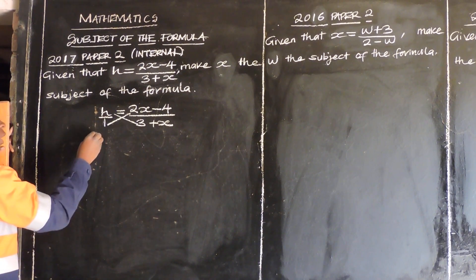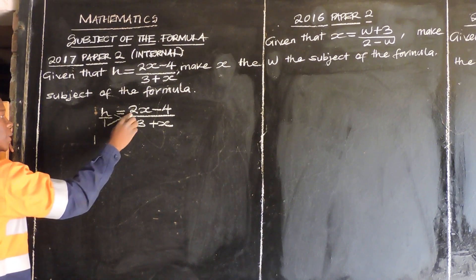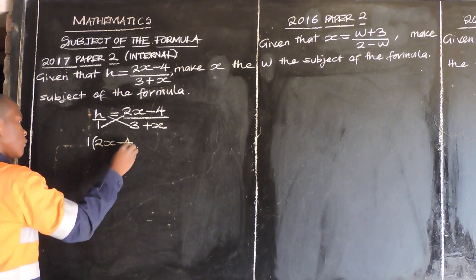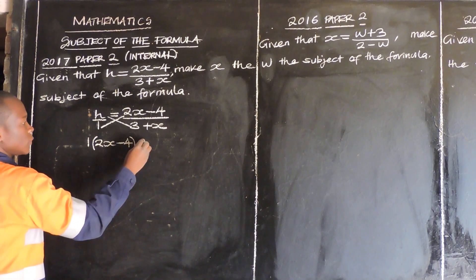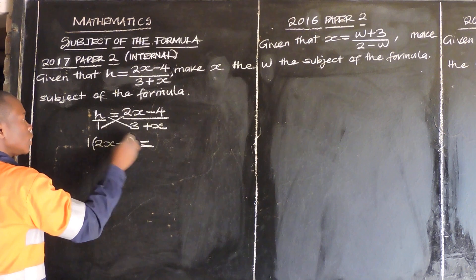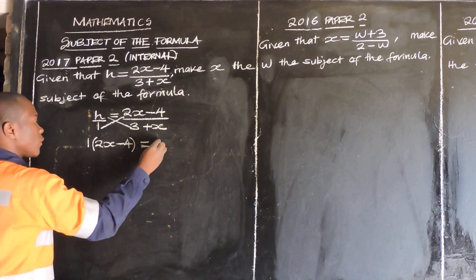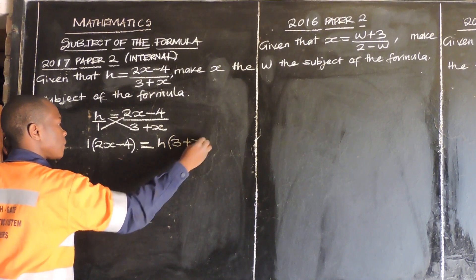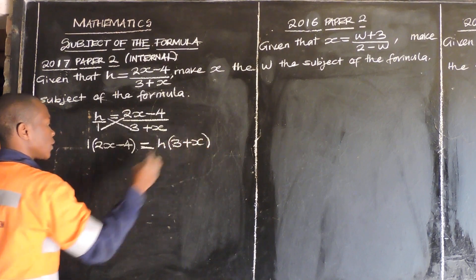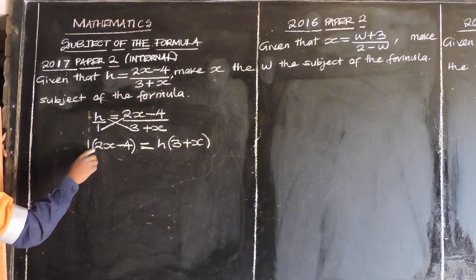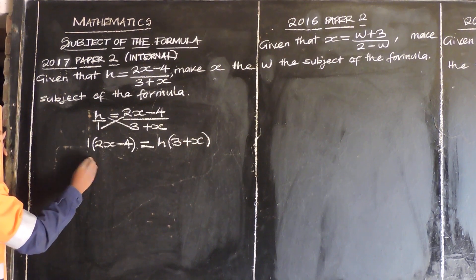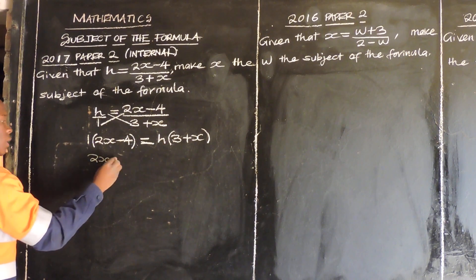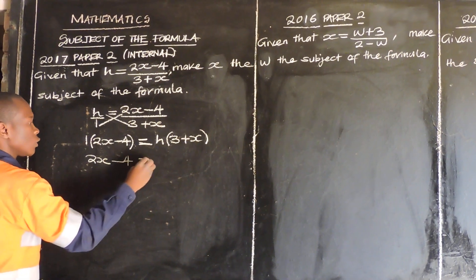So meaning we multiply 1 multiplied by 2x minus 4, and on the other side, h multiplied by 3 plus x. So 1 times 2x gives 2x, and 1 times negative 4 gives negative 4.